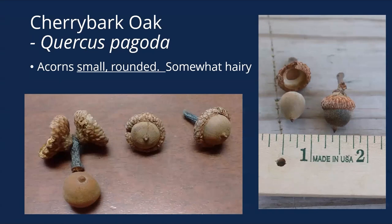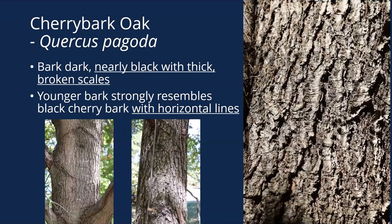The acorns, like most other red oak acorns, are small and rounded with shallow caps — kind of hard to tell apart from a lot of other red oak acorns. The bark is where it gets its name 'cherry bark' — it's dark bark, nearly black, with broken scales rather than long vertical ridges. Those broken scales give a resemblance to wild black cherry bark with its horizontal lines. The bark is quite different and really stands out, and those leaves definitely stand out — they're like no other of the red oaks.